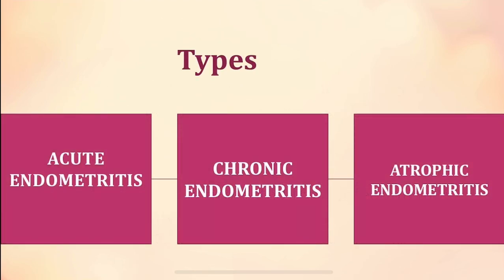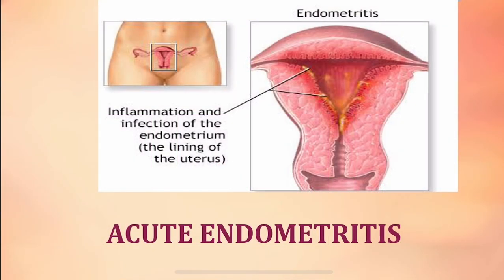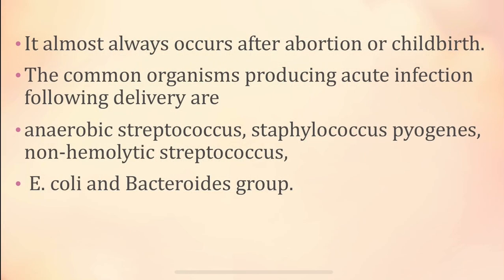The types of endometritis are acute endometritis, chronic endometritis, and atrophic endometritis. Acute endometritis follows an acute cause like abortion and childbirth where rupture of membranes can result in inflammation. The common organisms producing acute infection are anaerobic streptococcus, non-hemolytic streptococcus, and Staphylococcus pyogenes. We also have gram-negative bacteria like E. coli and the Bacteroides group.